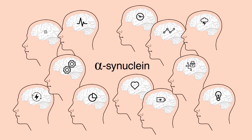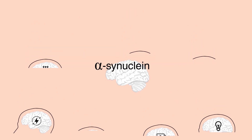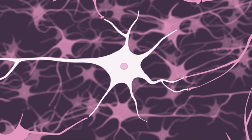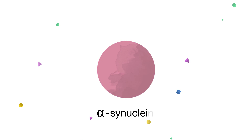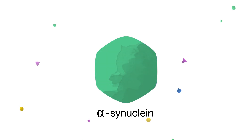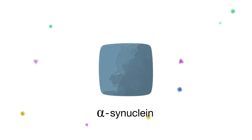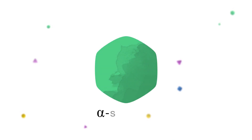Today, we know that many factors contribute to the development of Parkinson's disease, and that alpha-synuclein is a major player. Alpha-synuclein is a protein abundant in neurons. Its precise function is unknown as yet. Alpha-synuclein is a dynamic protein — it adopts different shapes that likely correspond to different functions. These forms may interact, combine, and form alpha-synuclein chains.